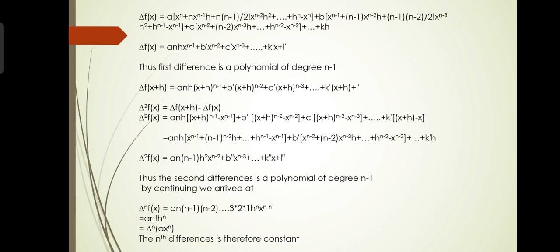Concluding all terms, Δ²f(x) = an(n-1)·h^2·x^(n-2) + b''·x^(n-3) + ... + k''·x + l''. Thus the second difference is a polynomial of degree n-2.